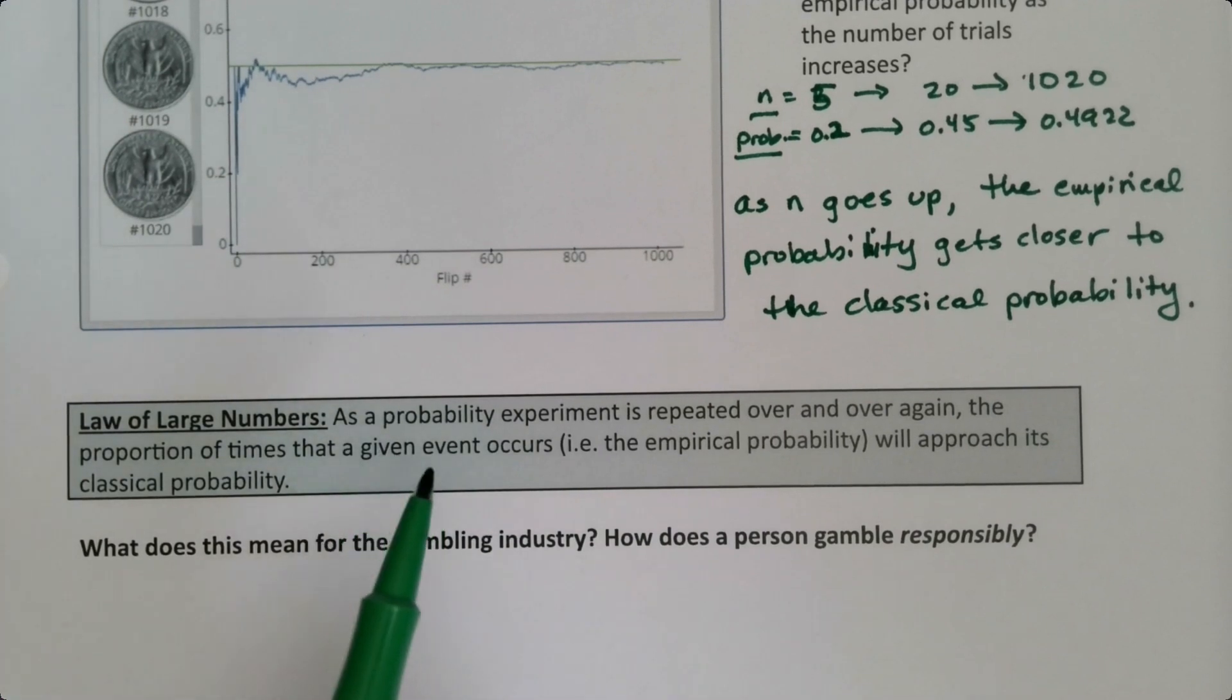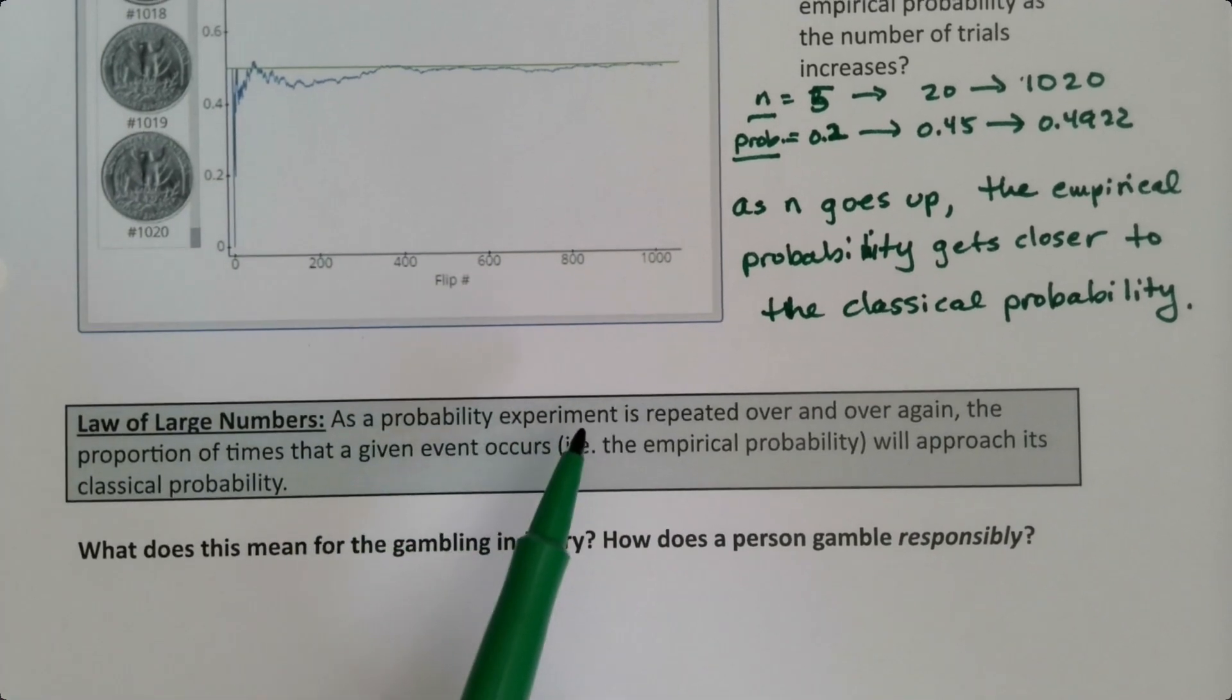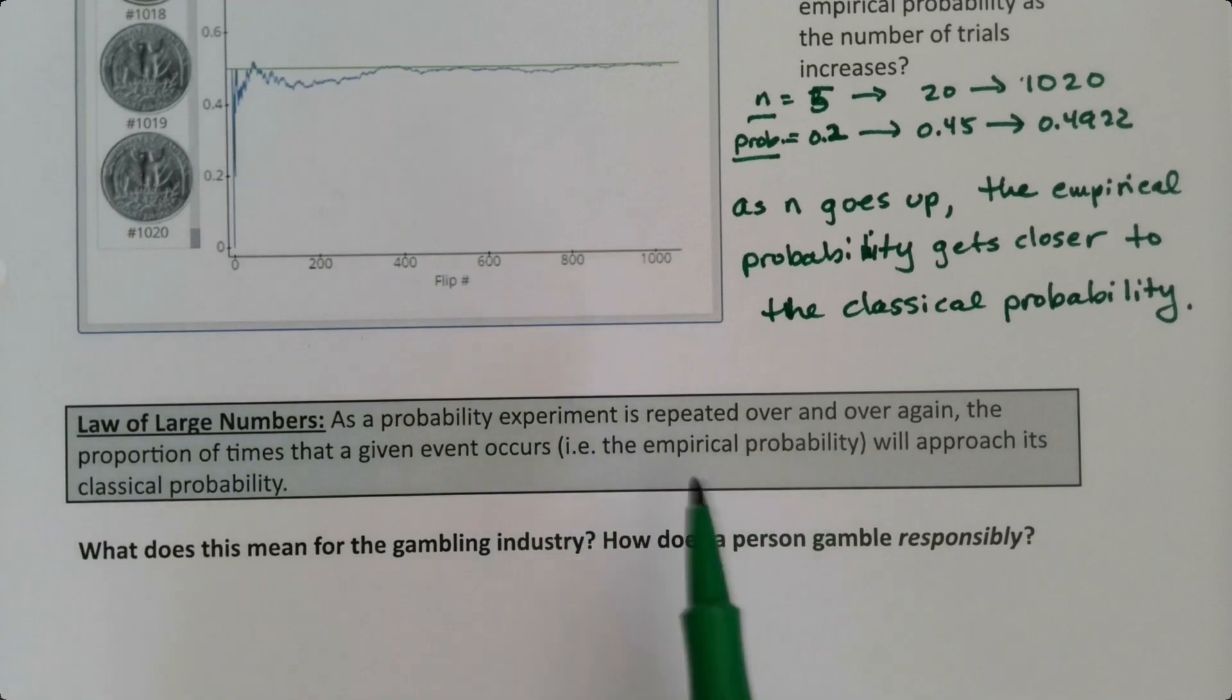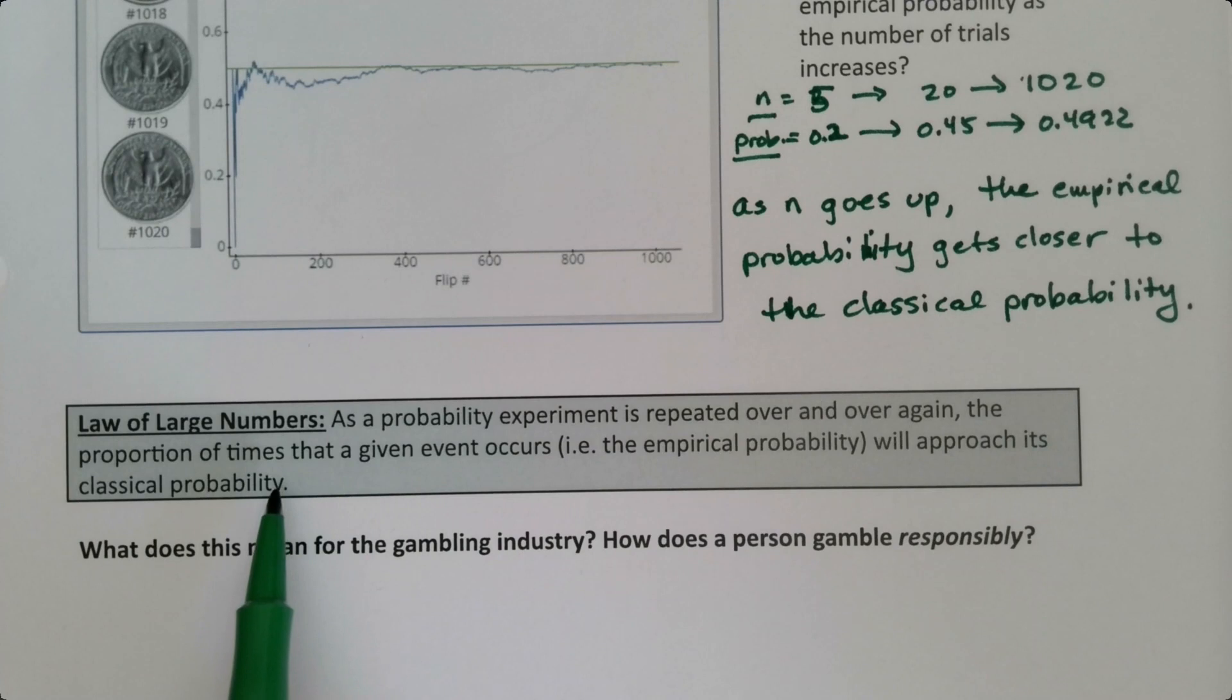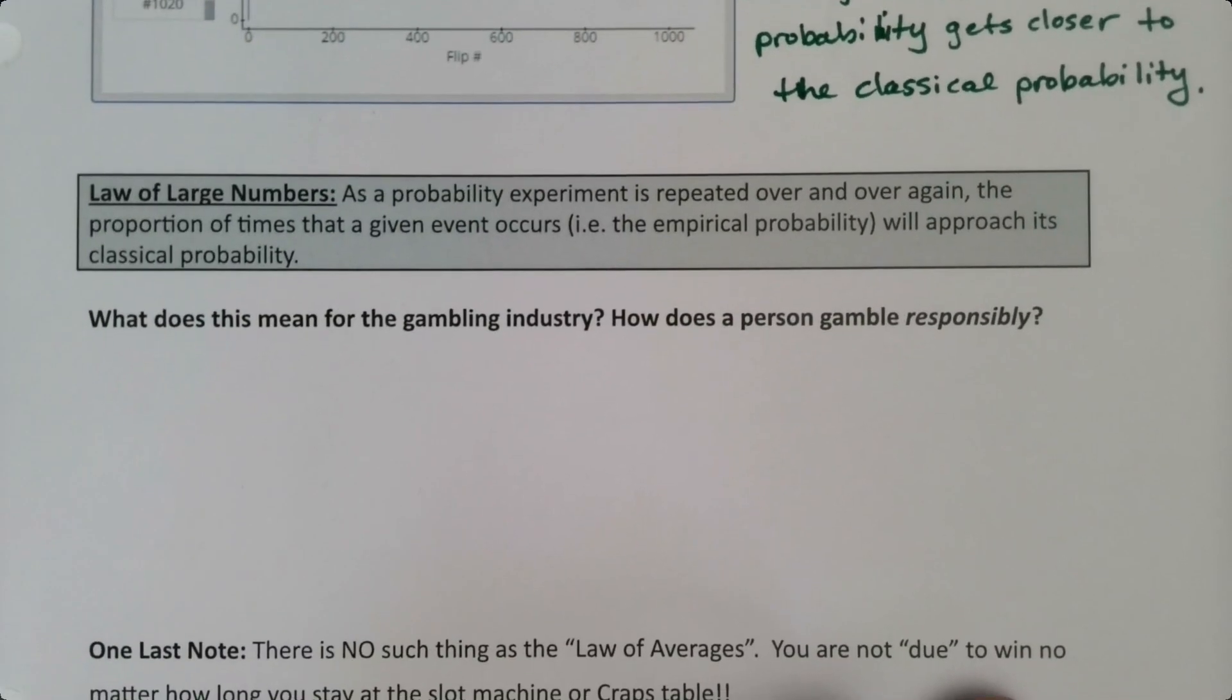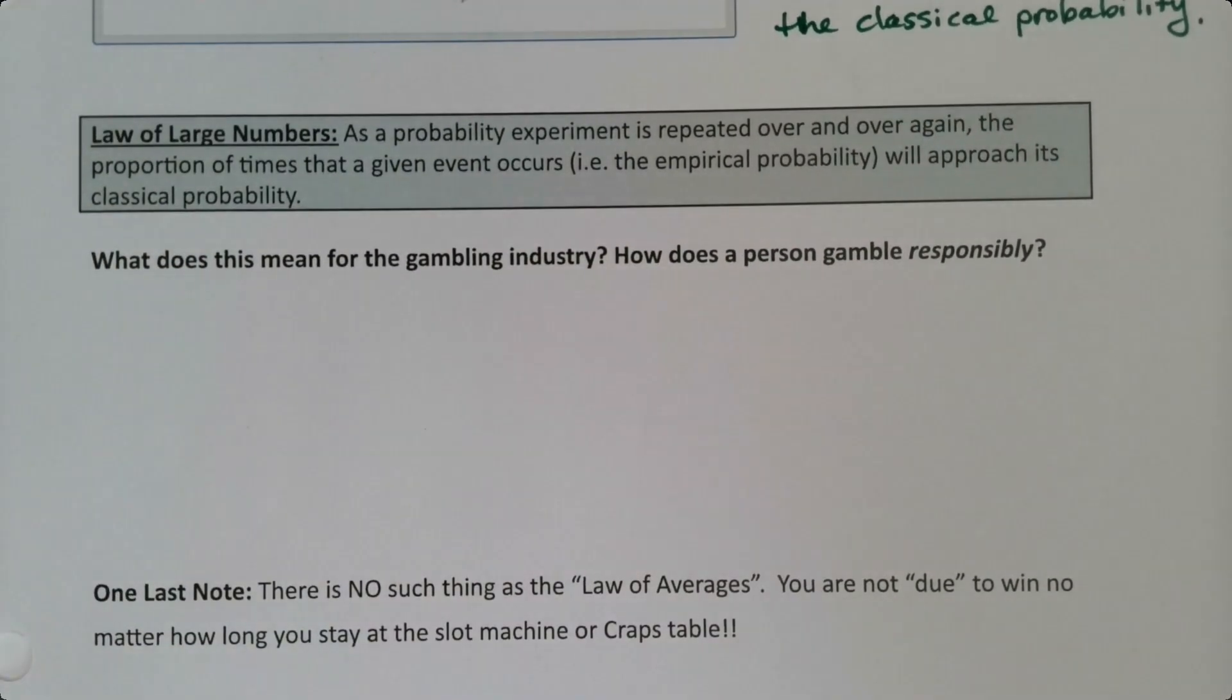And that's the law of large numbers. The law of large numbers says that if you take a probability experiment, like tossing a coin, and you repeat it over and over and over and over again, the proportion of times that a given event occurs, the empirical probability, will approach the classical probability. Now, what does this mean for us in practical terms?